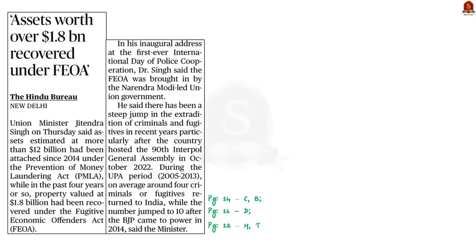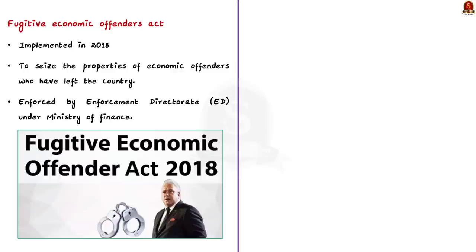Look at this news article. Yesterday, our union minister said that the government has seized nearly $1.2 billion from economic offenders in the past four years. He also mentioned that it was made possible because of the Fugitive Economic Offenders Act, which was implemented in 2018. In our discussion today, we will see the details about this Fugitive Economic Offenders Act. This act was enacted in 2018 to seize the properties of economic offenders who have left the country. The provisions of this act are enforced by the Enforcement Directorate, which functions under the Ministry of Finance.